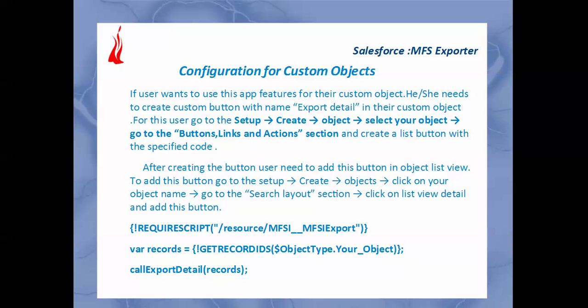For this we need to follow some steps. First, go through Setup and then Create Object. After going to the object detail page, we can see the new button creation option in the Button, Link, and Action section. Create a list button with the specific code mentioned here. This is a simple three-line code and we need to put our object name in place of 'your object'. After creating that button, the user needs to add this button to the particular object layout.